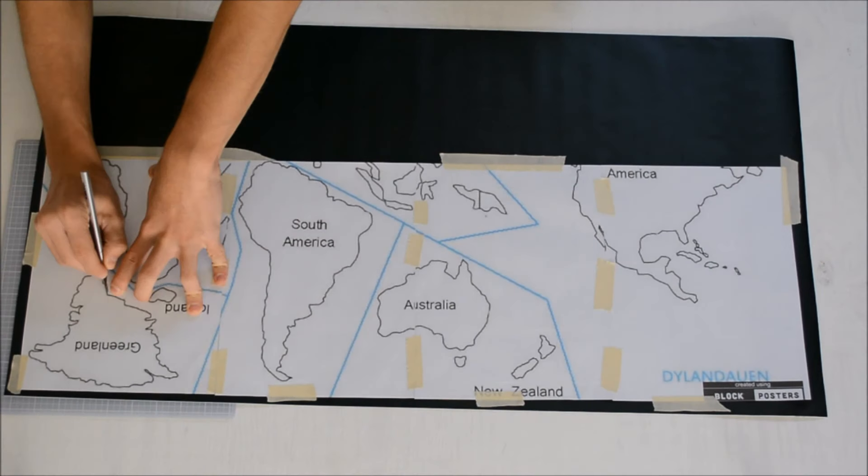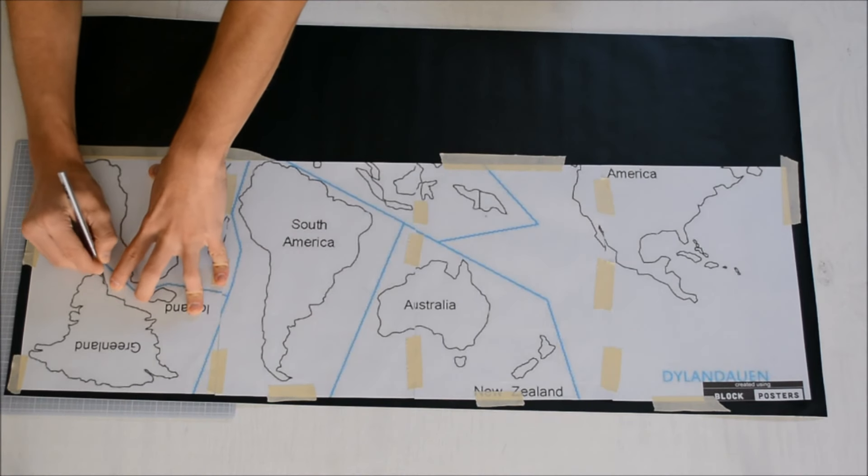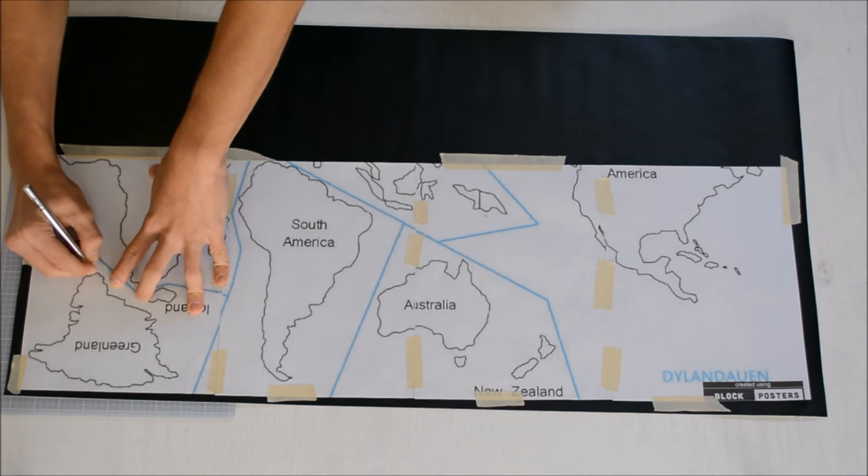Put a cutting board under your map and begin cutting along the outline of your countries. Be sure to press hard enough to cut through both layers.